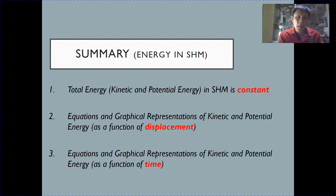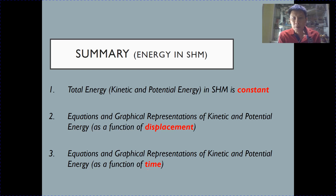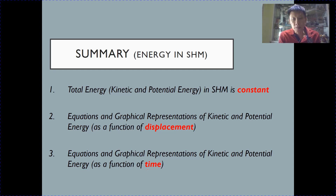To summarize section 4 — energy in simple harmonic motion: the total energy, which is the sum of kinetic and potential energy, is constant. We have learned the corresponding equations and graphs for kinetic and potential energy as functions of displacement, and also derived equations and graphs as functions of time. For the next section, we will look at damped and forced oscillation. See you.